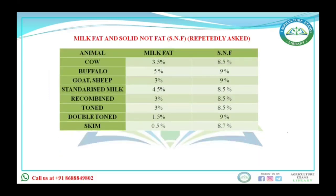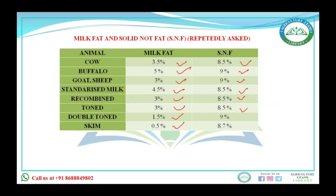From these topics, questions are repeatedly asked in examinations, so you must remember these figures. Fat percentage: cow milk 3.5%, buffalo milk 5%, goat and sheep milk 3%, standardized milk 4.5%, recombined milk 3%, toned milk 3%, double toned milk 1.5%, skim milk 0.5%. SNF (solid not fat): cow milk 8.5%, buffalo milk 9%, goat and sheep milk 9%, standardized milk 8.5%, recombined milk 8.5%, toned milk 8.5%, double toned milk 9%, skim milk 8.7%.